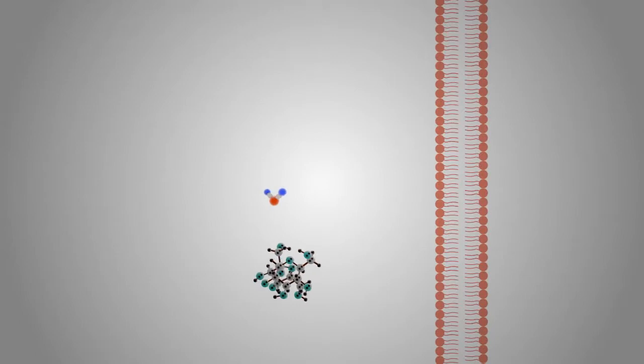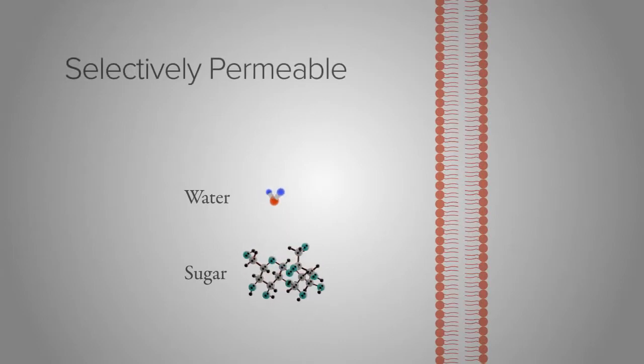These membranes that control the travel of certain molecules like sugar, but do not control the movement of other molecules like water, are called selectively permeable membranes.